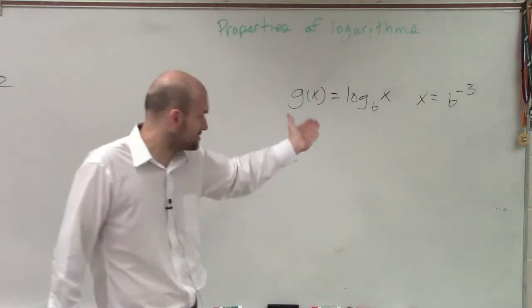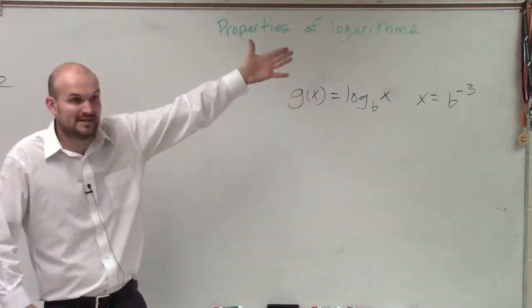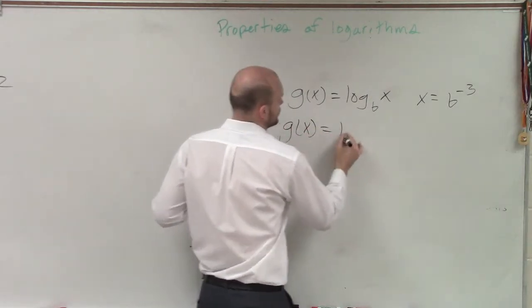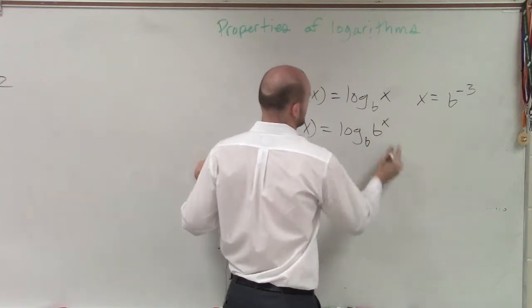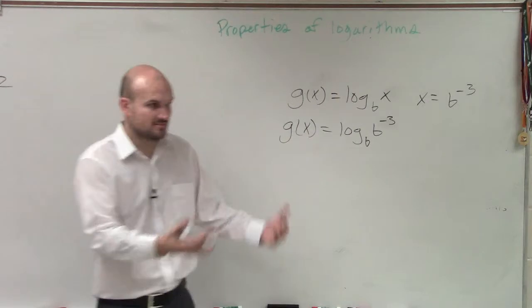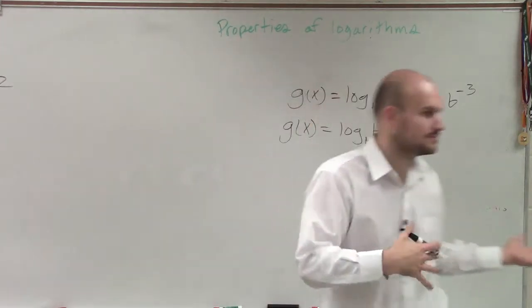If they say g of x equals log base b of x, and they say x equals b to the negative third, then we have g of x equals log base b of b to the negative three. So just, you plug in what x equals, right?